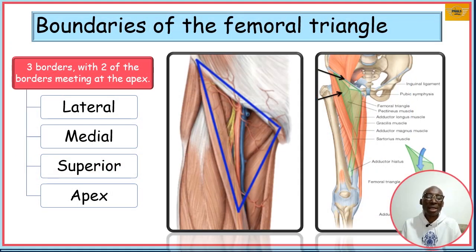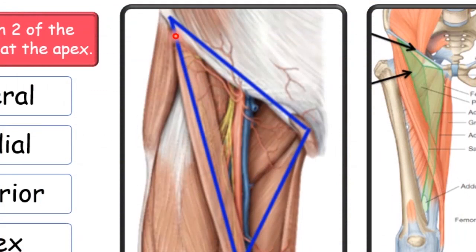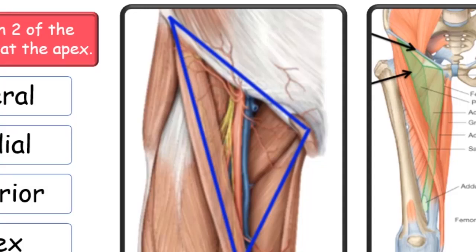This triangle has three borders. We have the lateral border, the medial border, and the border above. This upper border, apart from being called the superior border, is also called the base. We have the point where the lateral border meets with the medial border, and we call this point the apex.